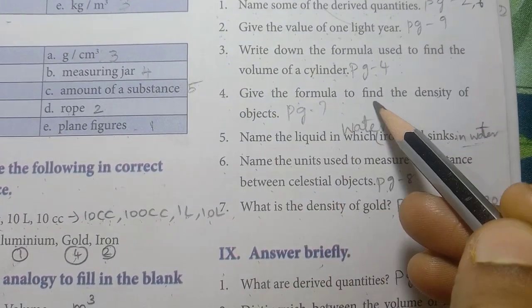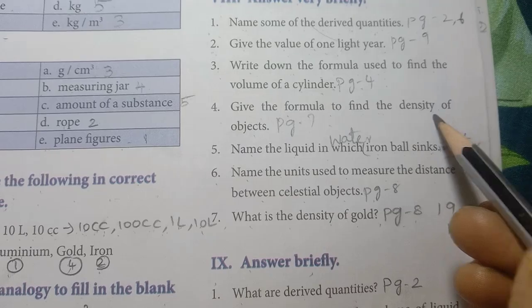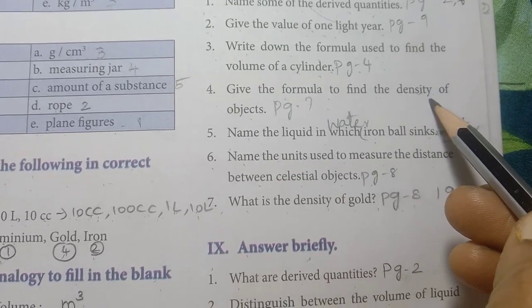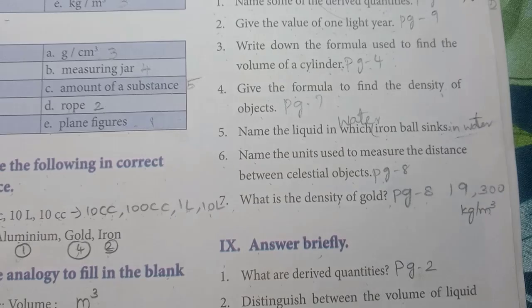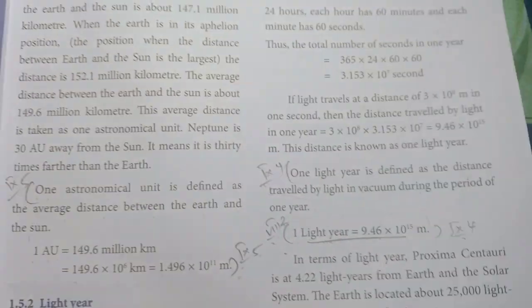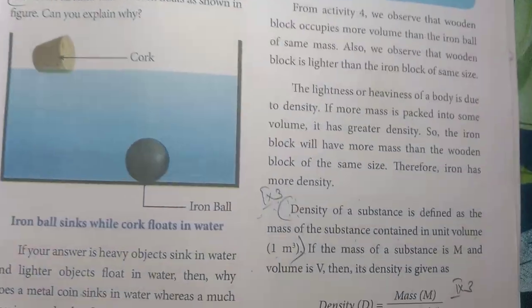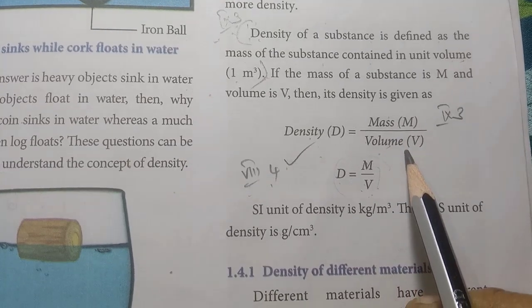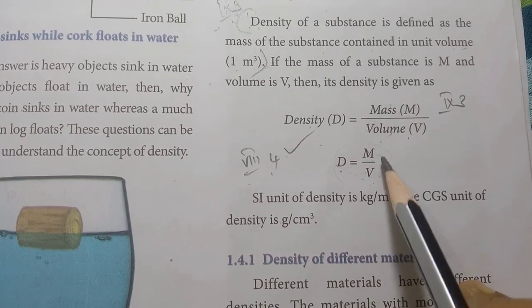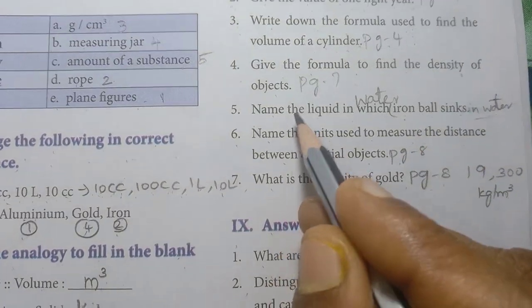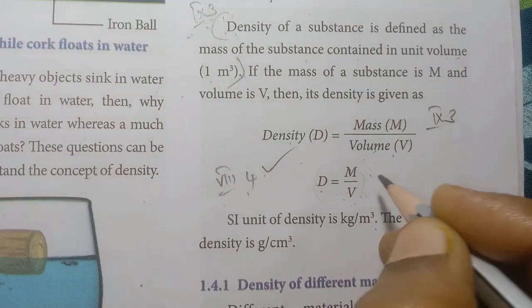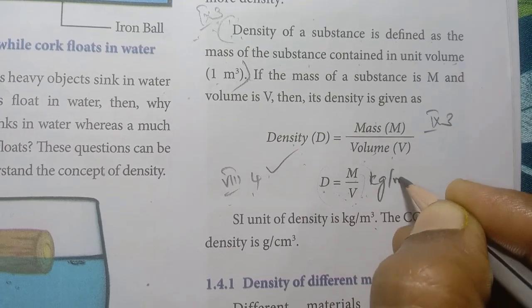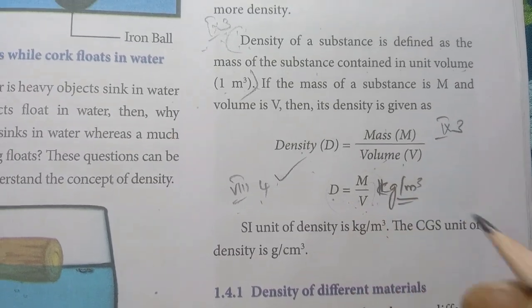Fourth: give the formula to find the density of objects. Page number 7. Density is equal to mass by volume. So D = m/v. The unit is kilogram per meter cube.